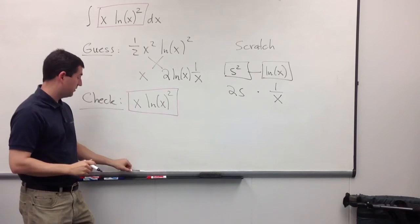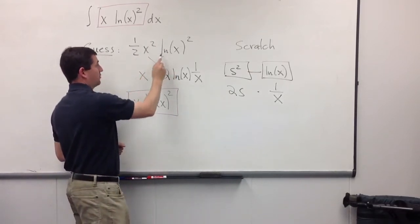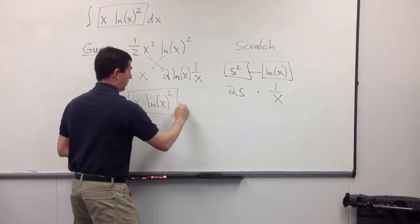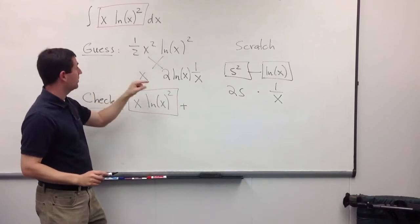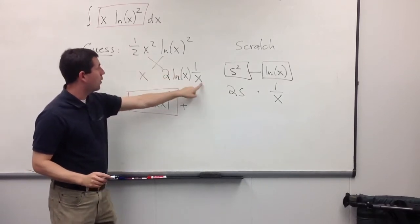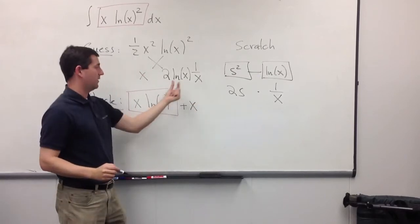The bad news is, well, we haven't finished using our product rule yet. We did this direction, but we have to add this direction as well. So, let's see. When I multiply this way, a half and two, those cancel. I have an x squared and a one over x. So, it'll just become an x. And then I still have an ln of x.